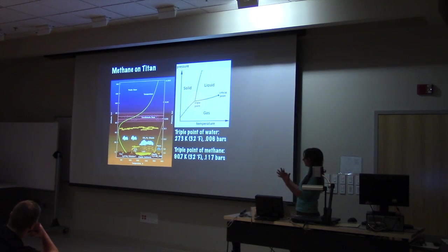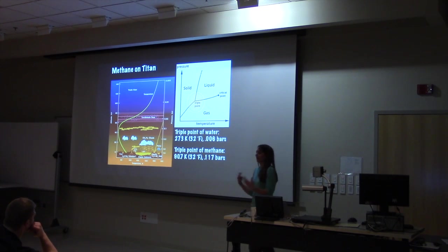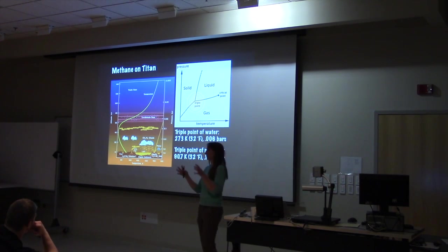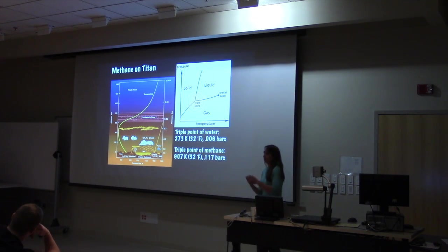The Earth is very special because the temperature and pressure at the surface of the Earth is such that water is very close to what we call the triple point. And this is a pressure versus temperature graph. That's the region where water, for example, on the Earth can be in its solid, liquid, or gas phase. Small changes in our atmosphere, temperature, or pressure can push it around.